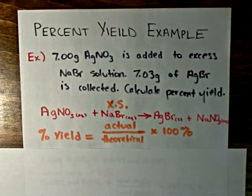And therefore the amount or the mass of silver bromide formed will be directly related to the 7 grams of silver nitrate that we have.